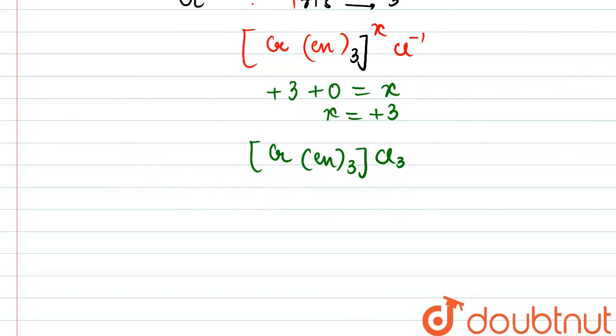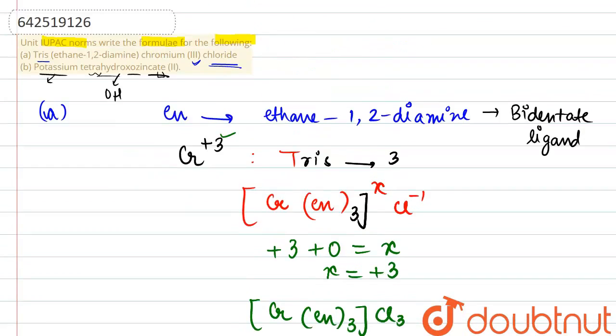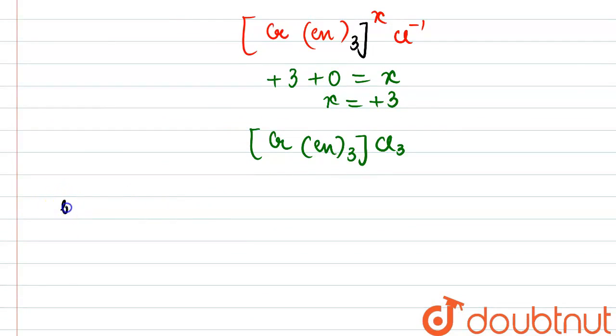So for that, potassium would be present outside the coordination sphere. Zinc, the central metal. The ligand is OH. And again, we don't know how many potassium units would be there. So, we will be considering the charge X. Zinc comes with the oxidation state of plus 2 given in the complex. And we know that charge on 1 OH is negative 1.